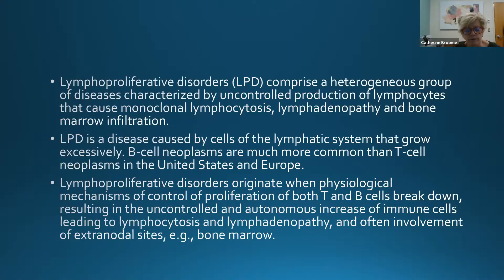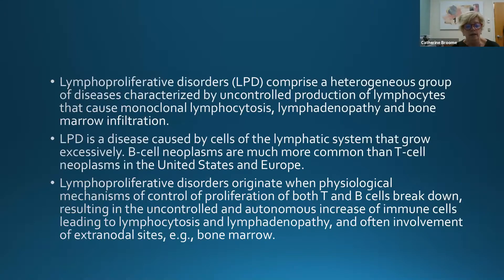The CNS and GI tract are the top extranodal sites, but lymphomatous involvement can occur anywhere — the jaw, liver, ovaries, or causing lytic lesions in bones. Because lymphocytes normally help with infections, these patients can be immunoglobulin deficient, leading to recurrent sinopulmonary or skin infections. Skin infiltration by malignant cells can present as a rash — leukemia cutis.